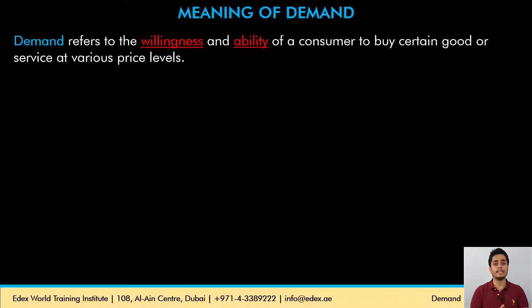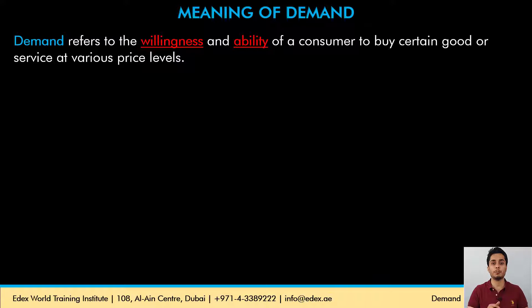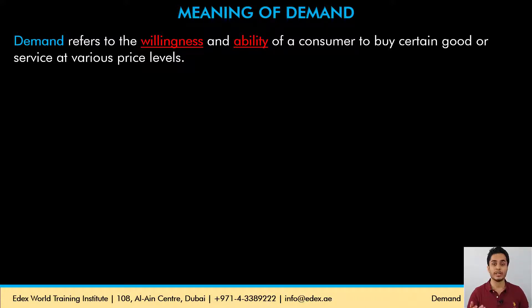So what do you mean by demand? Demand is the willingness and ability of a consumer to buy certain goods and services at different price levels. There are two important terms here: willingness and ability. Willingness is the desire to buy a product. But if that desire is not backed up by the ability to purchase the product, then it is not an effective demand. For demand to be effective, the consumer should be willing and able to buy the product in terms of the income he earns.